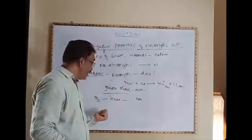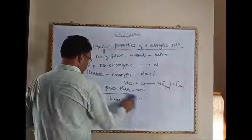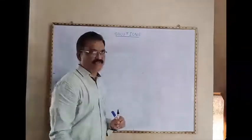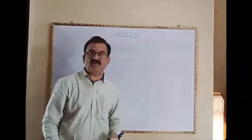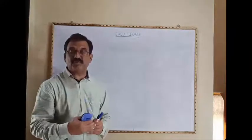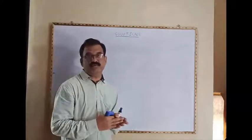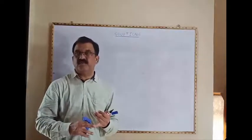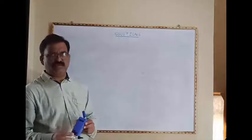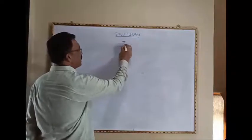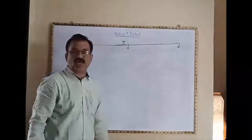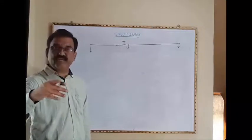The apparent molar mass of electrolytic solutions is lower than non-electrolytic solutions. In this chapter, we have already seen the classification of solutions into various types. On the basis of physical state of solute and solvent, solutions are classified into nine types. On the basis of the amount of solute present, solutions are classified into three types: saturated, supersaturated, and non-saturated solutions. On the basis of osmotic pressure, solutions are classified into three types.